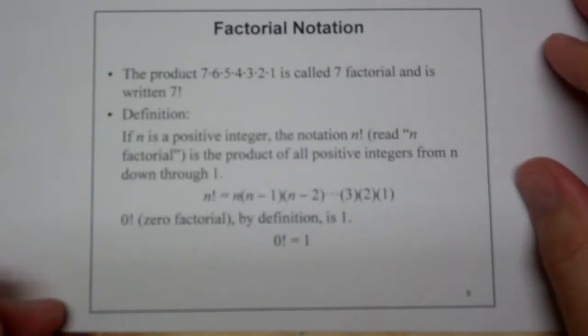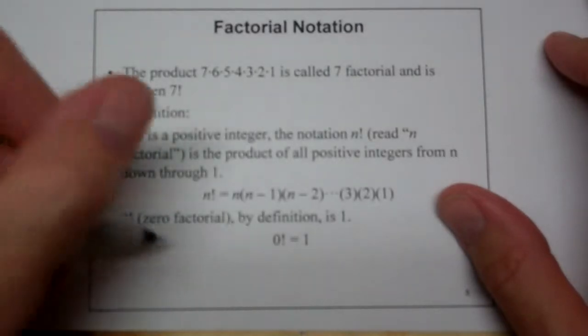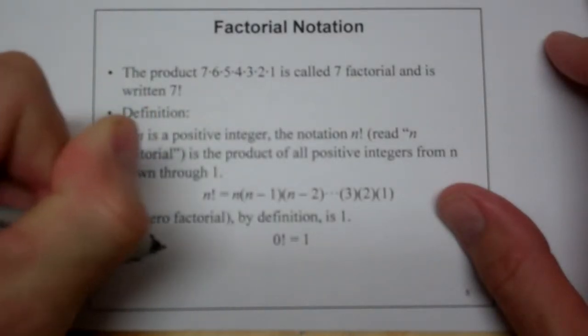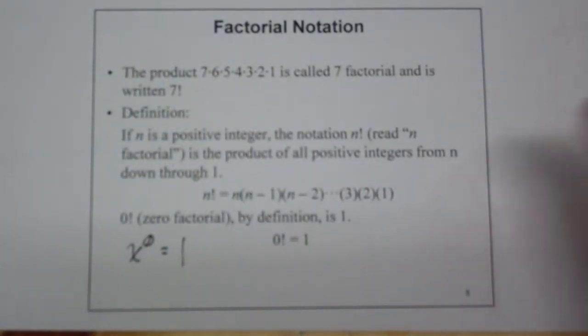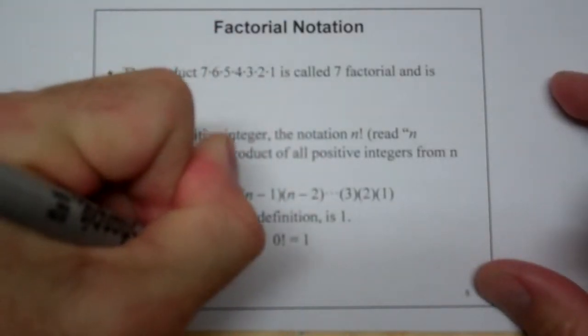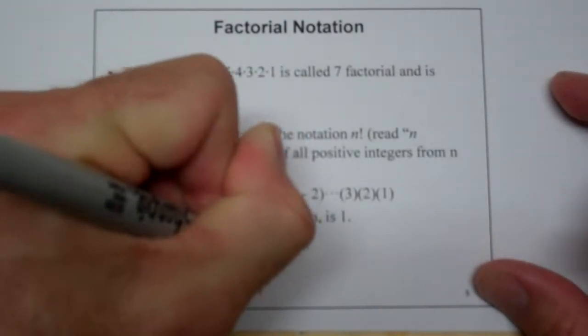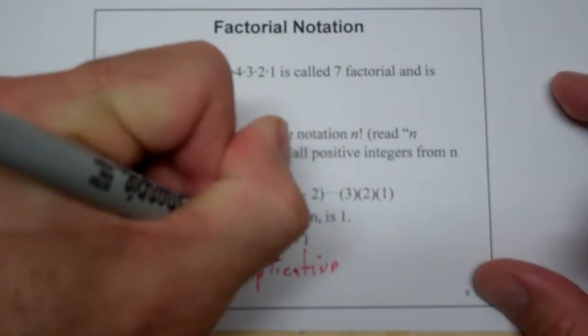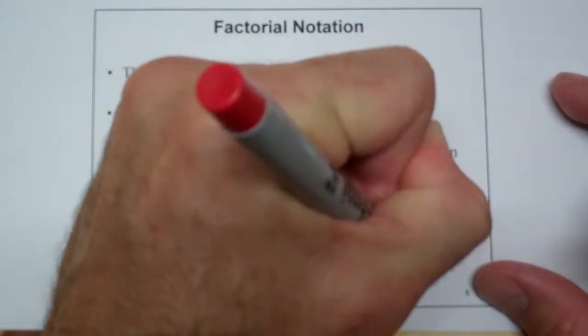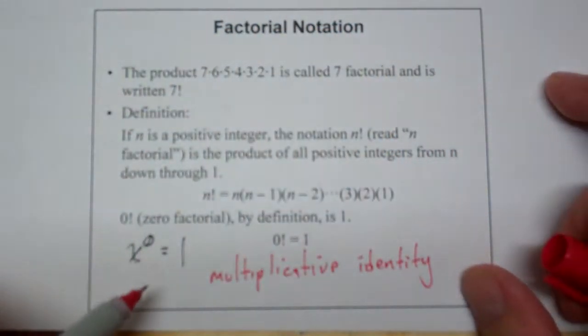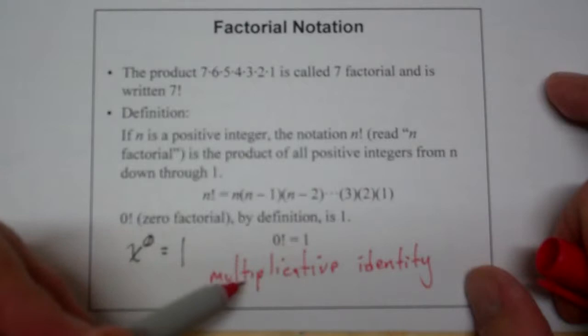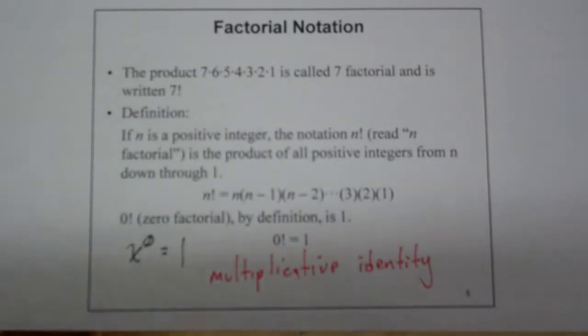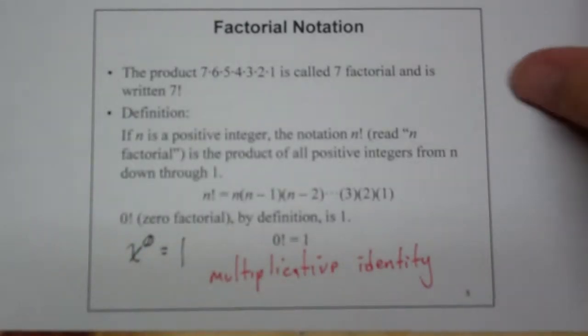This makes all of our other math work. I know it seems kind of weird, but just think of it like, remember, x to the zero power is also one. So just think of zero factorial being one because one is the multiplicative identity. And so because we have a multiplication going on with the factorial, we want zero factorial to give us the multiplicative identity and not zero which is sort of the additive identity.